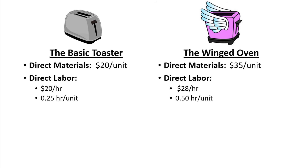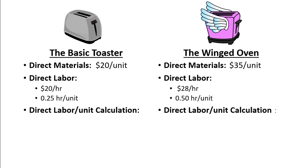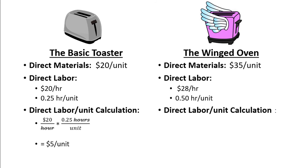Now we have enough information to do the easy part: calculating the direct material and direct labor costs. These costs are the same regardless of whether you use the plant-wide, departmental, or activity-based costing, as those methods only apply to the overhead costs. For direct materials, there is no calculation necessary — we already know the direct material cost per toaster. For direct labor, we need to do a little more work. For the Basic Toaster, we take the $20 direct labor cost per hour and multiply by the 0.25 hours per unit, giving us $5 of direct labor cost per unit. Applying the same process to the Winged Oven gives us a direct labor cost per unit of $14.